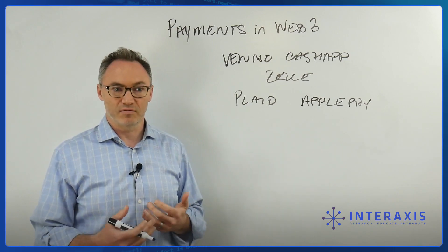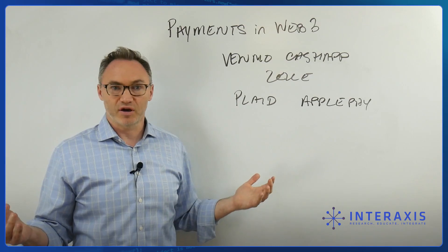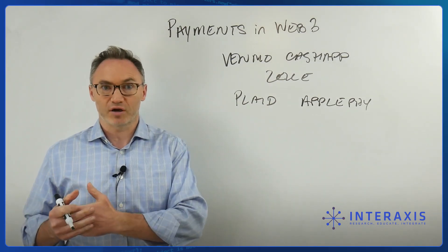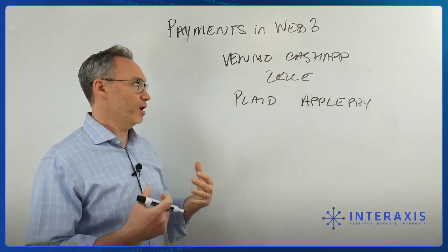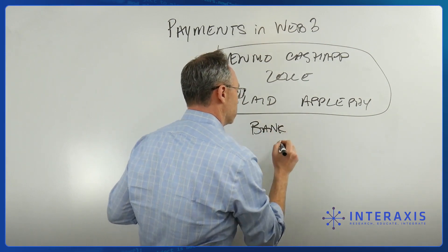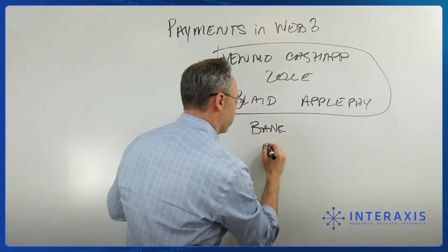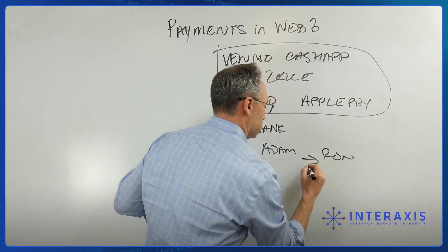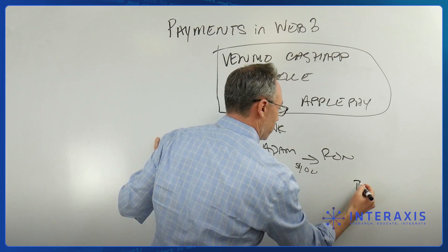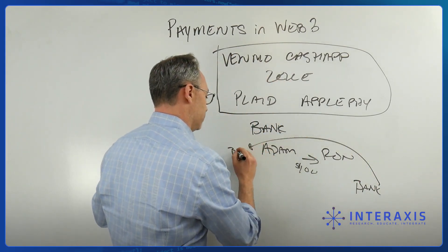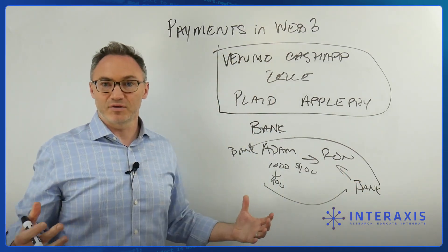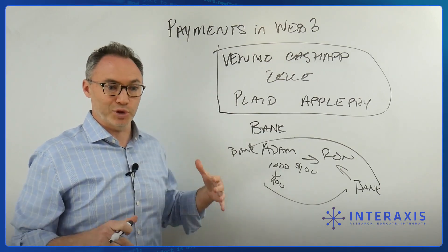There are days I've forgotten my wallet, but as long as I have my phone I can use Apple Pay, Zelle, or Venmo. But remember — all of these fintech applications just sit on top of bank infrastructure. When I use Venmo to pay Ron $100, Venmo is just an intermediary, the equivalent of a check. It's Ron's bank checking with Adam's bank, taking out $100 and putting it in Ron's account. It's the same thing — just a technology overlay. It's not a revolution.